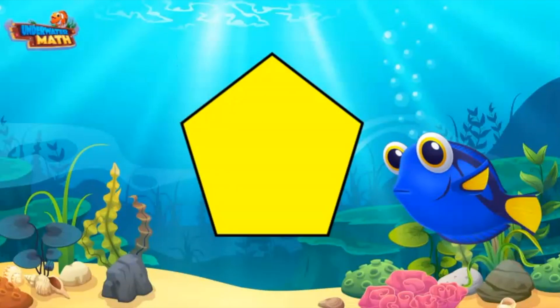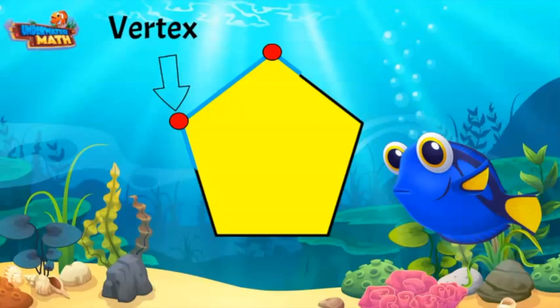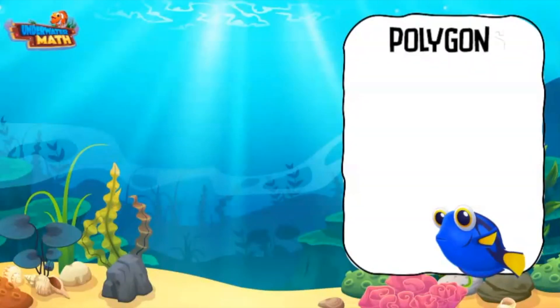They are also identified by the number of vertices on the shape. Vertices are points where two edges connect. A two-dimensional shape has the same number of sides and vertices. This pentagon has five vertices.